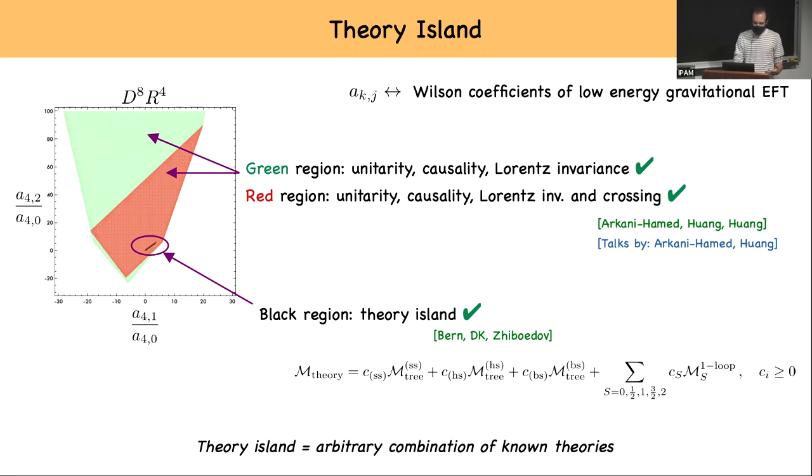All right, so now I want to go ahead and study this island and see what is it that makes it special compared to the rest of the space. So how can I think of this transition between the red region and the black region? But before I do that, let me go back and take one more look at the transition from the green region to the red, and maybe that will give me a hint about how to think of the latter transition.